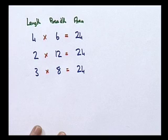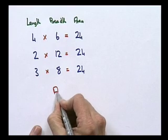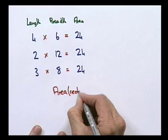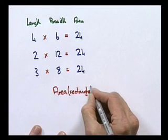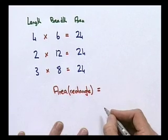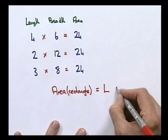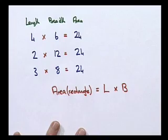If we studied this a little longer and we looked at other situations, we'd soon conclude that the area of a rectangle is given by the length of the rectangle multiplied by the breadth of the rectangle. And there we have our first formula. The formula for calculating the area of a rectangular surface.